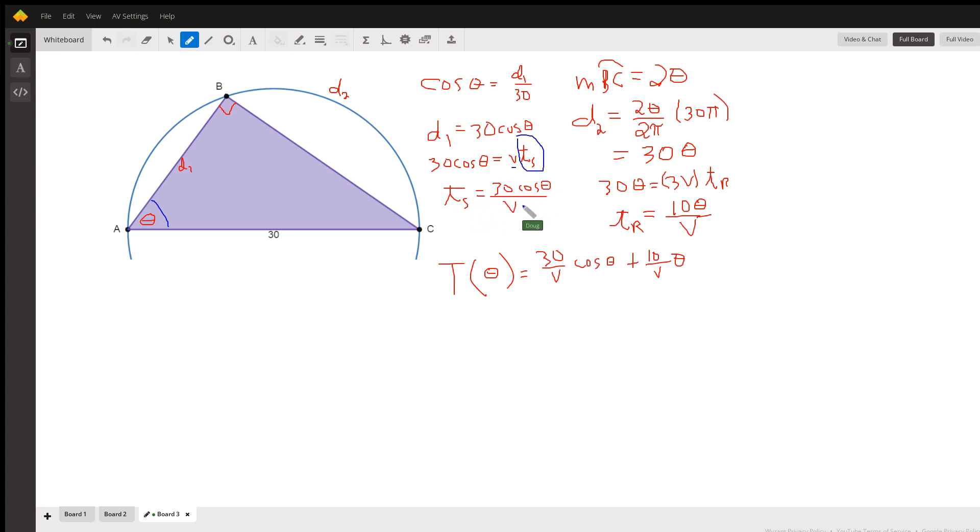We'll call d sub 2 the distance that he runs from point B to C along the circumference of the circle. Since this angle theta is intercepting arc BC, d sub 2 must be twice that inscribed angle. So the measure of arc BC is twice theta.